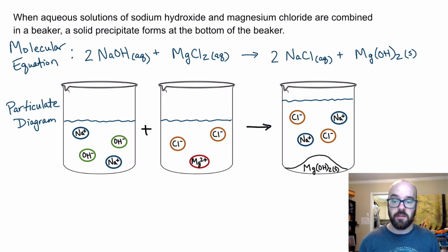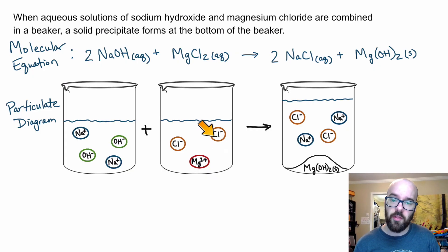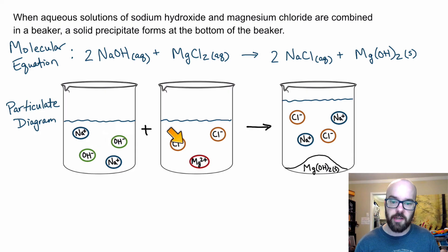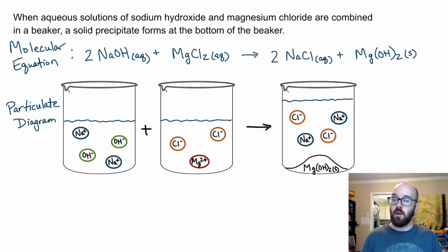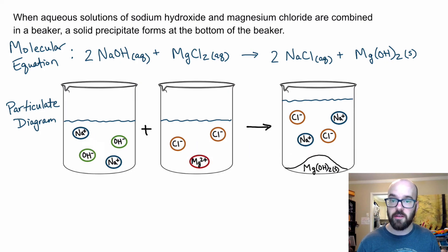This is what's actually happening in solution. Notice I've got chlorides here — two chlorides in the reactants, two chlorides in the products. Did those actually do anything in the reaction? No. We call those spectator ions. They're there to balance the charge of the magnesium or the hydroxide, but they weren't involved in the reaction. Same with the sodiums: we started with sodiums in solution, we ended with sodiums in solution — nothing changed. Magnesium is different: we started with magnesium ions but ended with magnesium hydroxide solid — that was a chemical change.